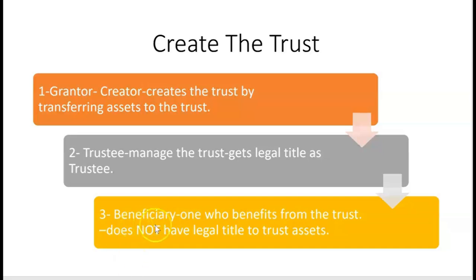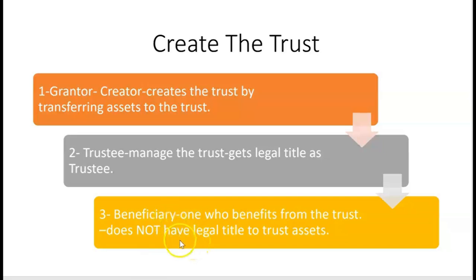His CPA could be the trustee, or grandpa can name someone else. Then name the beneficiaries — who do you want to benefit from this trust? The beneficiaries will not have legal title to the trust assets, because that belongs to the trustee, but these assets and the income from them will eventually go to the beneficiaries — they will no longer go to grandpa.